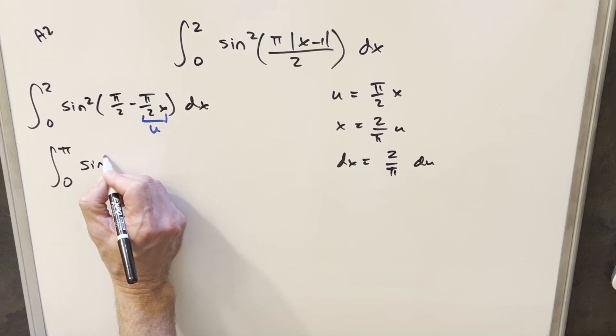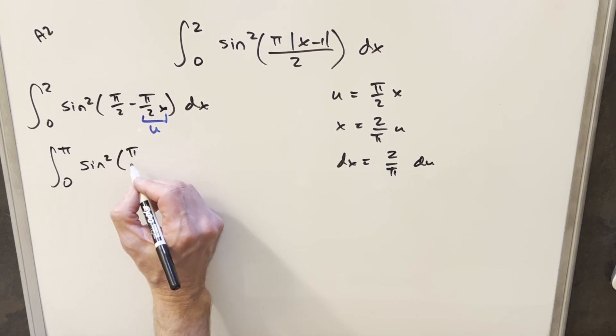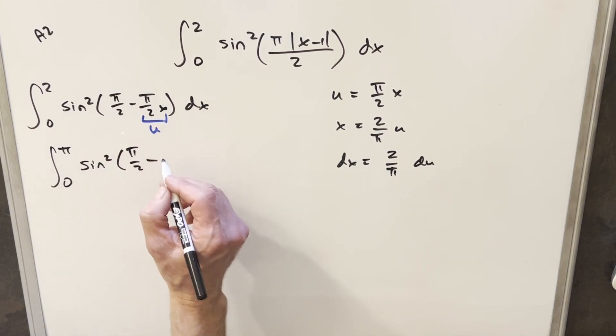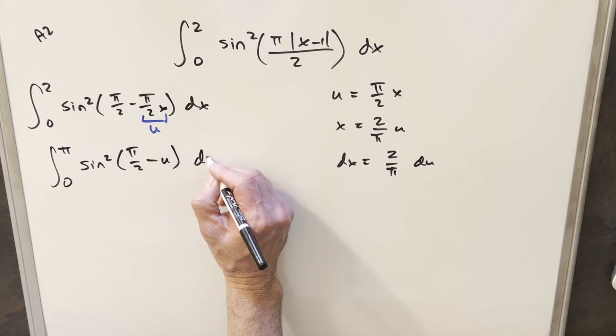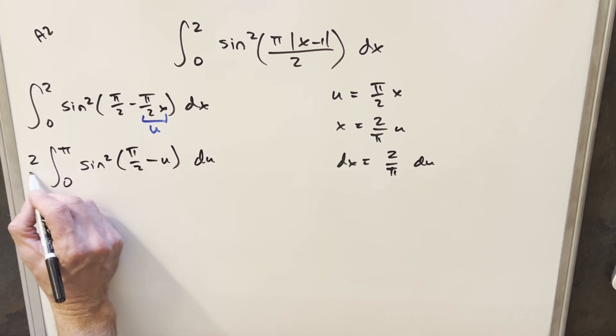Plugging 0 in here, we just get a 0 for the lower bound. Then we'll just rewrite things. So we'll have sine squared, pi over 2 just stays the same. Then this piece over here becomes u. Our dx becomes 2 over pi du. But what I'm going to do is take the 2 over pi and just bring it out front.